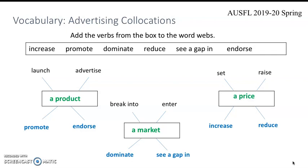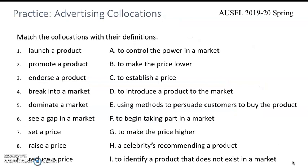In order to go over their meanings in more detail, let's do a matching exercise. Pause your video and match the collocations with their definitions. Let's check the answers: number 1 is D, 2 is E, 3 is H, 4 is F, 5 is A, 6 is I, 7 is C, 8 is G, and 9 is B.